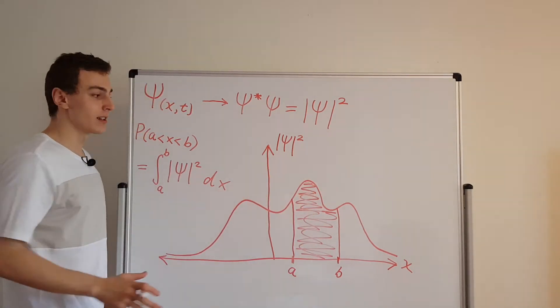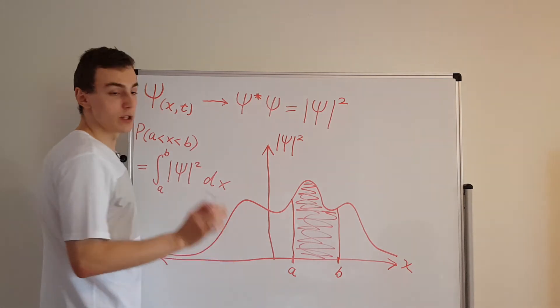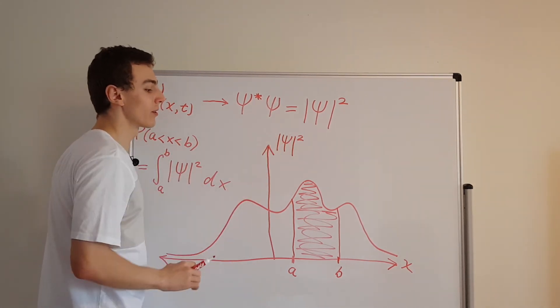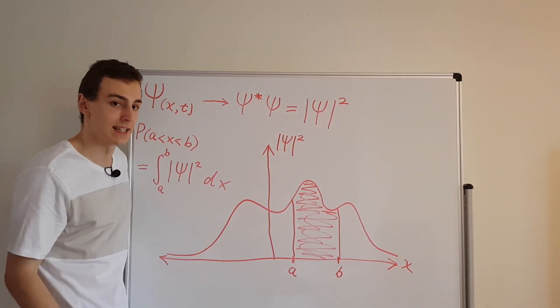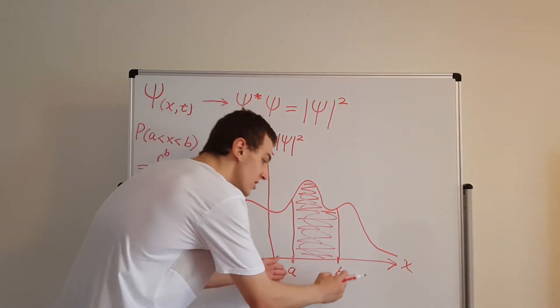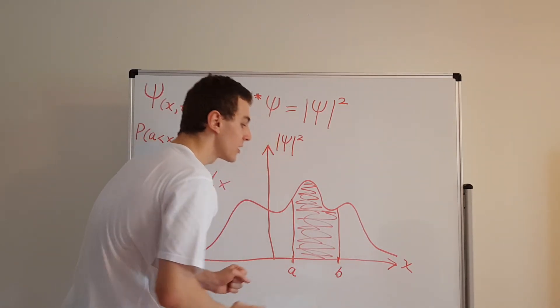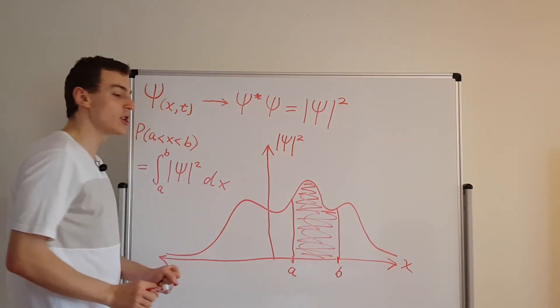So until we do the measurement, the wave function, and particularly the square amplitude of the wave function, is going to give us the probability density. And if we pick a certain interval, that is actually going to give us the probability of measuring the output.